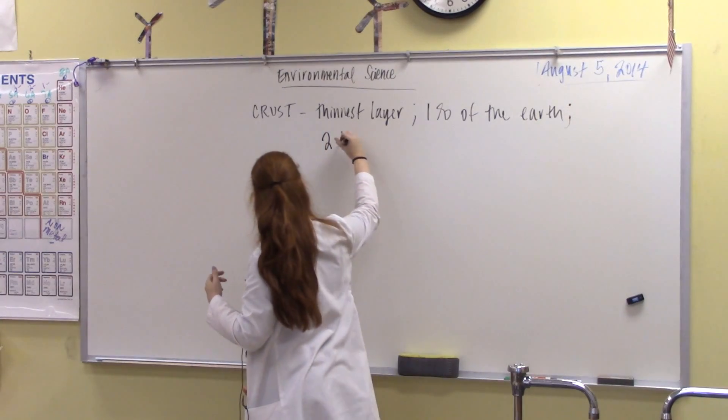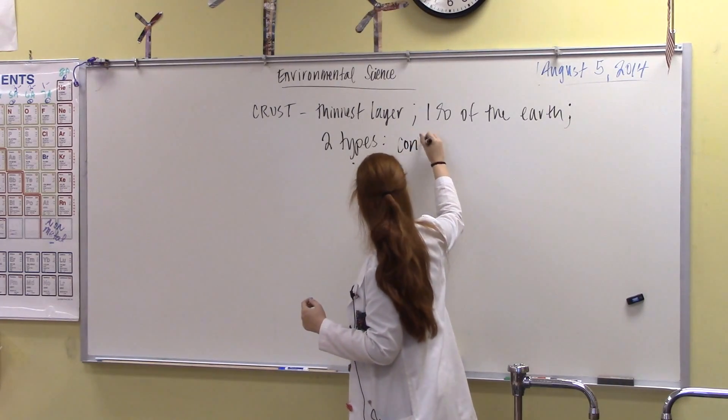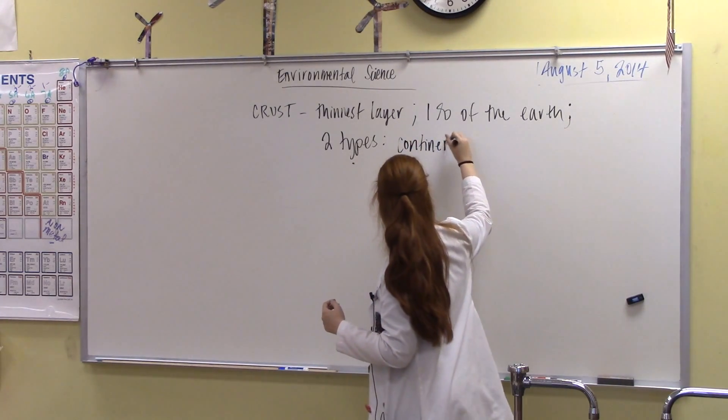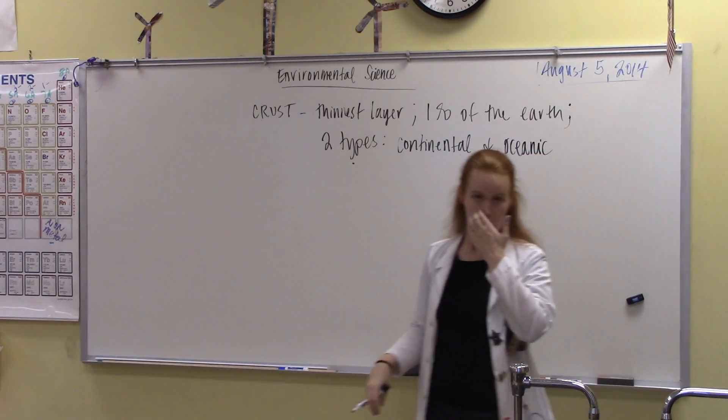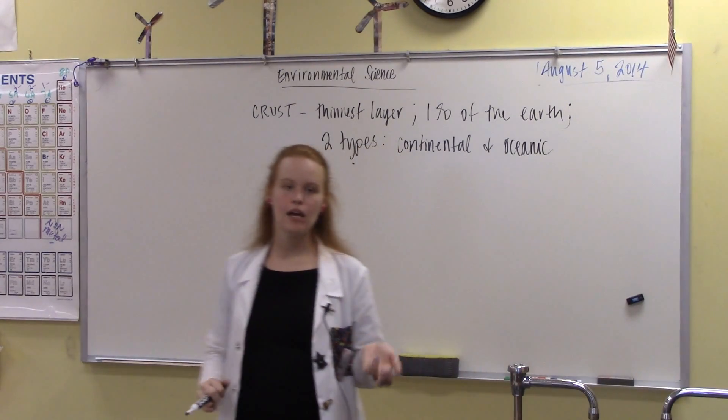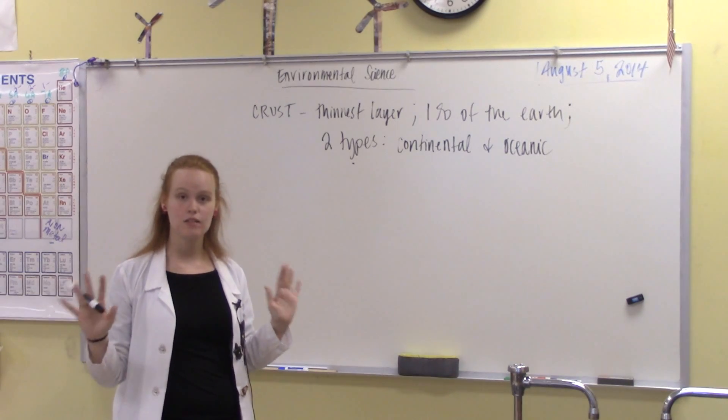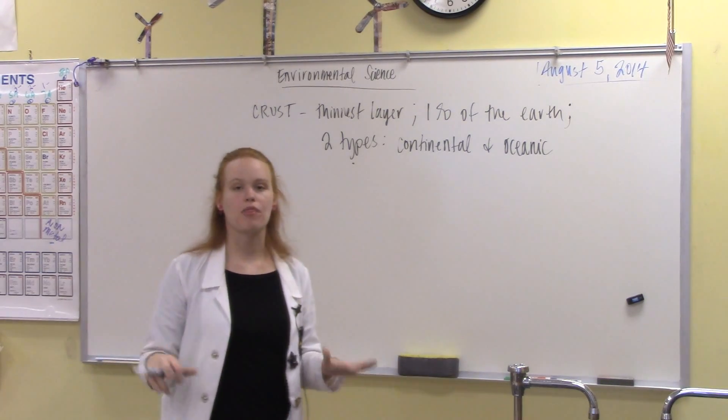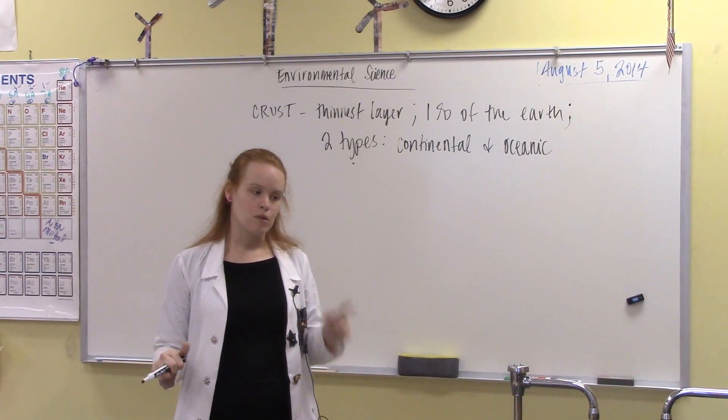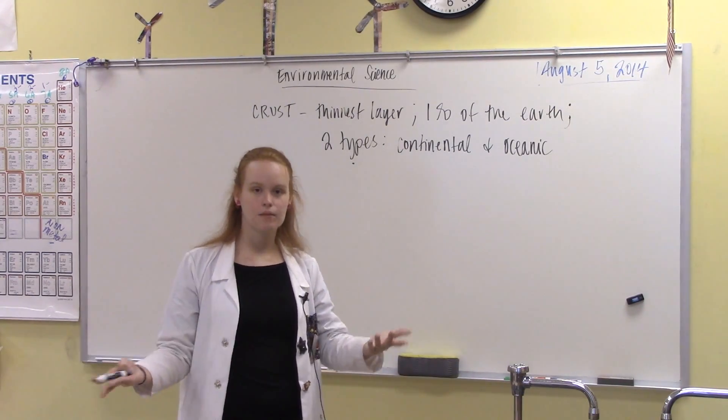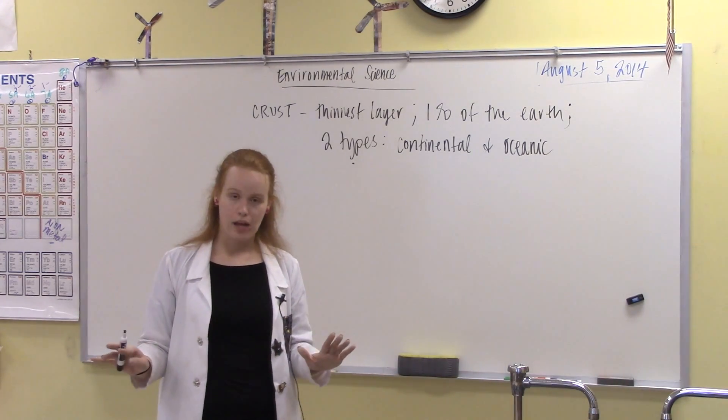So, it is not only the thinnest layer, it only makes up 1%. But, there are two types of crust. Those types are continental and oceanic. Now, us scientists, we are not necessarily known to be the most creative people in the bunch. We are not very creative when it comes to naming things. We either name things after ourselves or we name things exactly as we mean them to be.